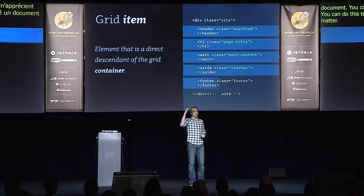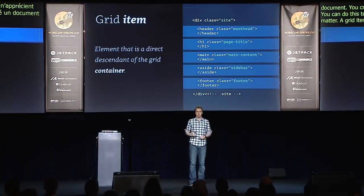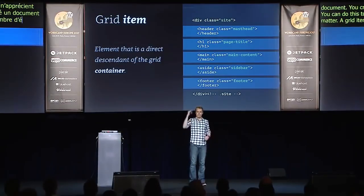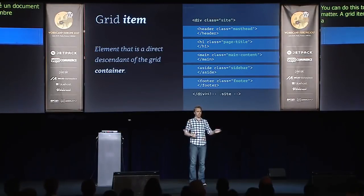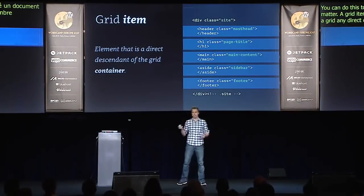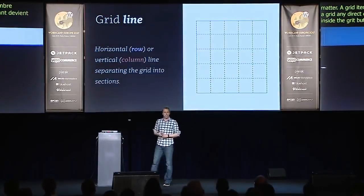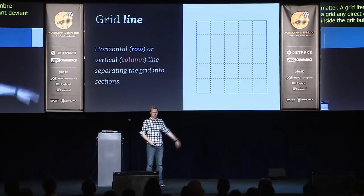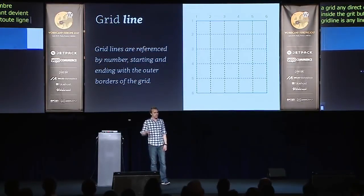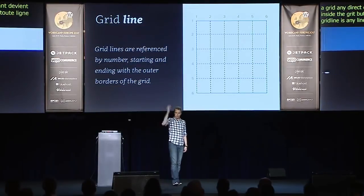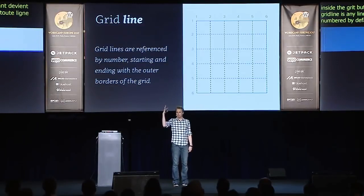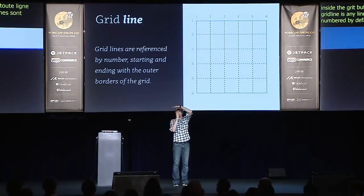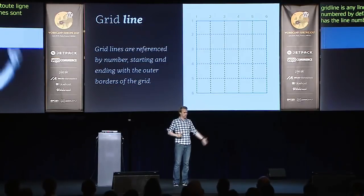A grid item is any direct descendant of a grid container. So if you create a grid, any direct descendant automatically becomes a grid item placed inside the grid — but only the first-level descendants, just like it is with Flexbox. A grid line is any of the lines you draw inside the grid, horizontal or vertical. The grid lines are numbered by default, so the first edge of the grid has line number one, and then you count: two, three, four, five, six. The last one has the last number.